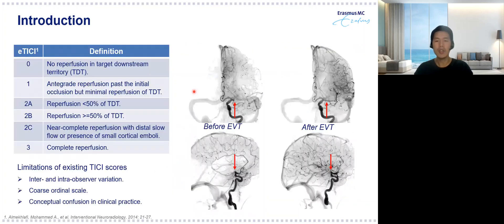On the right side of this slide, you can see an example of M1 occlusion which is later on removed by an endovascular treatment. Treatment success is generally measured by visually inspecting the amount of reperfusion on DSA images before and after an endovascular treatment. A couple of grading metrics such as ETK, shown in the left side table, have been defined to quantify the reperfusion.